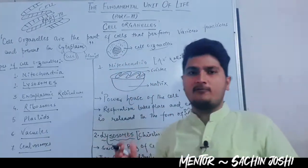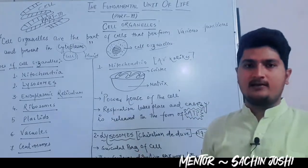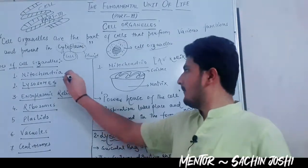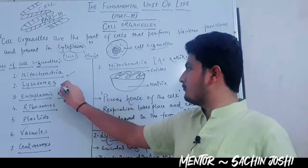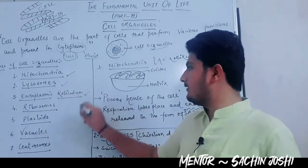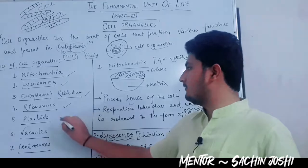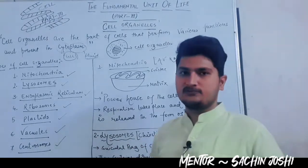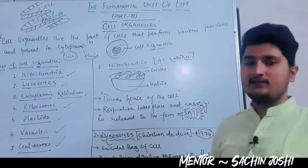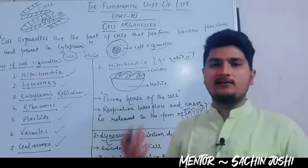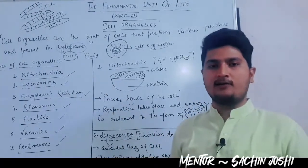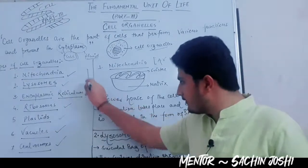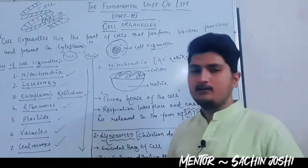There are various types of cell organelles present in the cell. Some of them are: mitochondria, lysosomes, endoplasmic reticulum, ribosomes, plastids, vacuoles, and centrosomes. Even though besides these seven cell organelles, so many other cell organelles are also there in the cell. We will discuss each cell organelle one by one in this video.